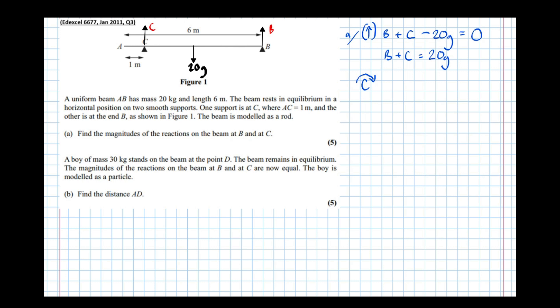So taking moments. Right, so this force here is a distance of two meters because the weight acts in the middle of the bar. We're one meter from the end, so there's two meters between those two. So the force is 20G times the distance from the pivot C which is two meters, and that has a clockwise turning effect.